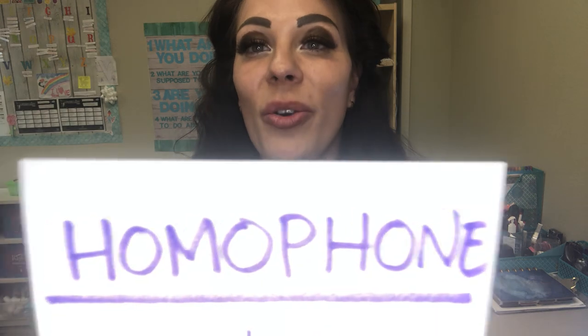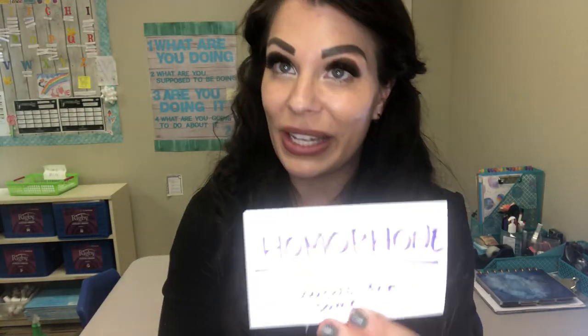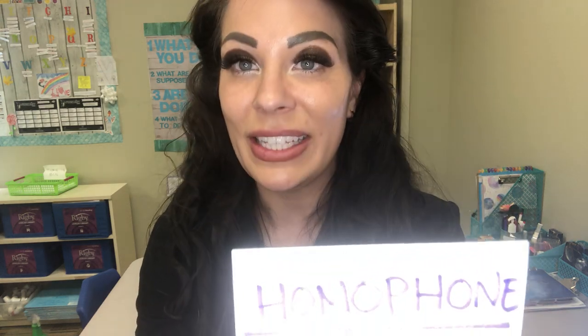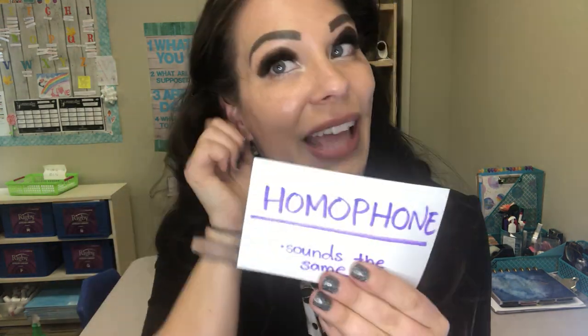Our last one: homophone. Think of 'phone' — like you can hear on a phone, or a phoneme is the smallest unit of sound. These words sound the same, are spelled differently, and have different meanings. Like 'flower' — F-L-O-W-E-R — or 'flour' you use to cook or bake — F-L-O-U-R. Or 'ate' something — A-T-E — versus the number 'eight' — E-I-G-H-T.